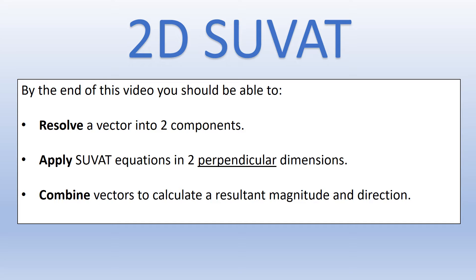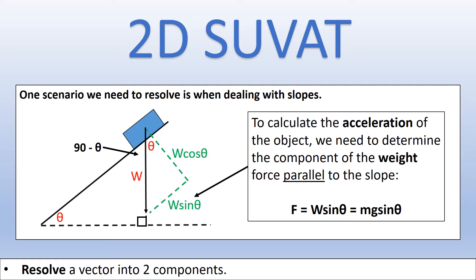Starting with slopes: one situation in which we need to resolve vectors is when we're dealing with slopes. If we consider just the weight force of the object, we know the weight force always acts from the center of an object and always acts vertically downwards, but the object is going to slide down the slope parallel to the surface.